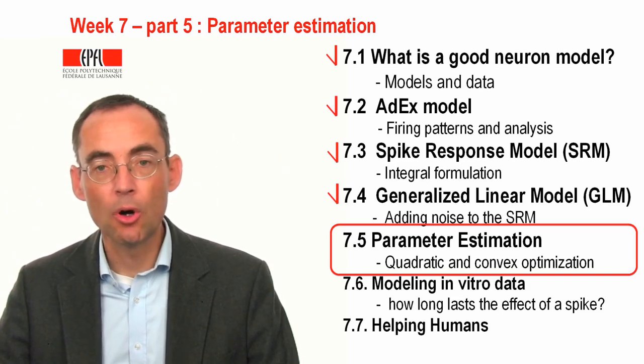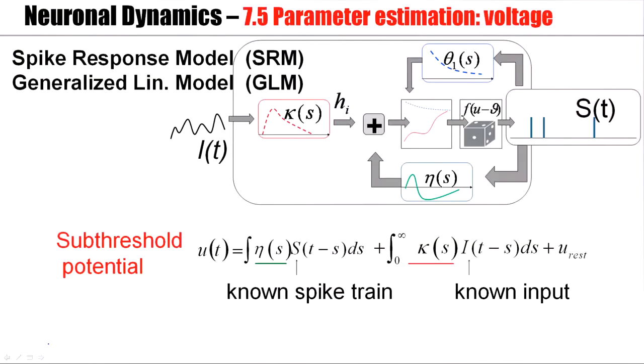Let's now talk about how to optimize parameters of such a neuron model. Here again our model. Input is filtered by a first filter kappa. This is this term over here. We inject a known input, it's filtered with this filter kappa, and that contributes to the membrane potential. Then this membrane potential is compared with a threshold, and depending on the distance between membrane potential and threshold, spikes are generated stochastically, and these spikes are fed back via a filter eta, which contributes to the membrane potential. So eta is something like the spike after potential.